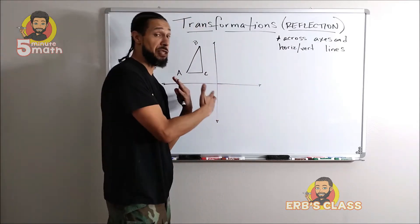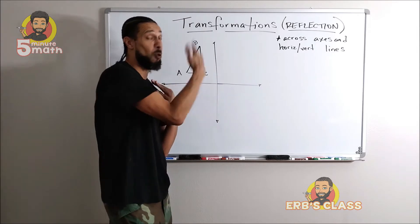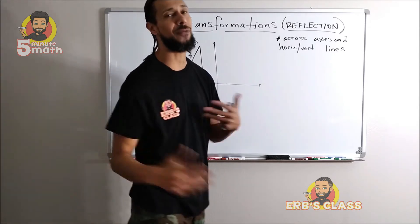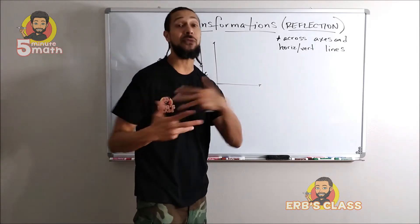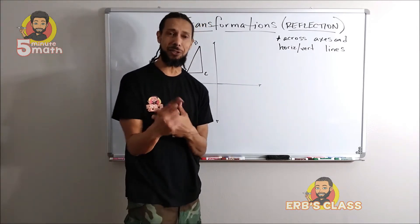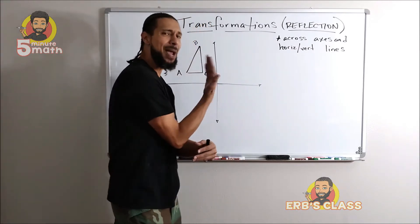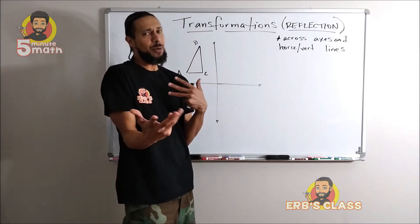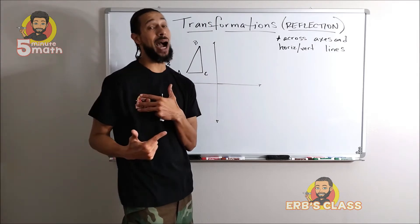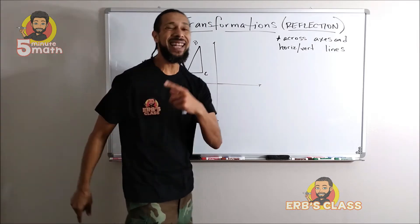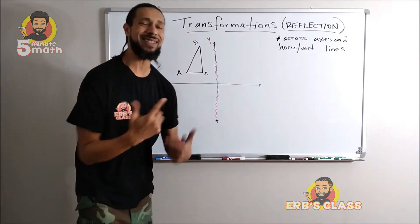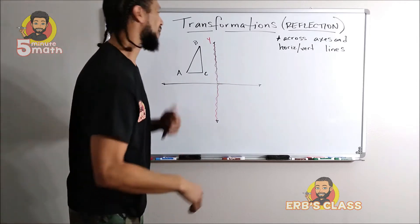We're going to talk about reflecting across the axes — either the x or the y — or any horizontal or vertical line for that matter. Whenever I'm reflecting across a line, the first thing I like to do is highlight that line. So let's say we were reflecting this triangle across the y-axis — let's highlight the y-axis.